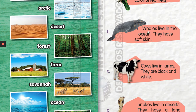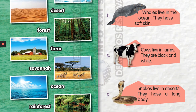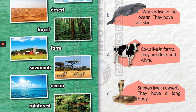Whales live in the ocean, they have soft skin. Las ballenas viven en el océano, ellos tienen una piel suave.